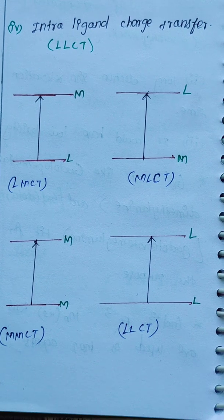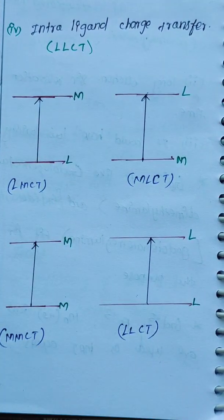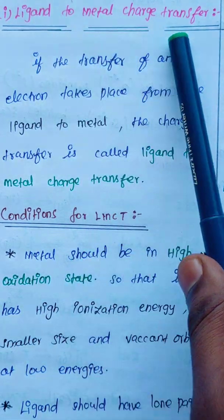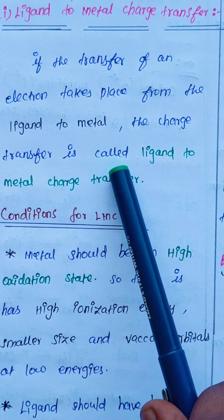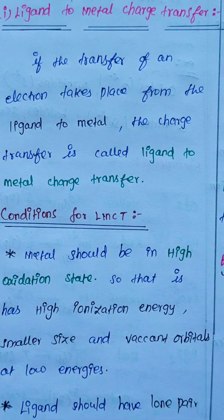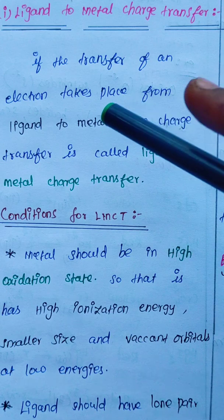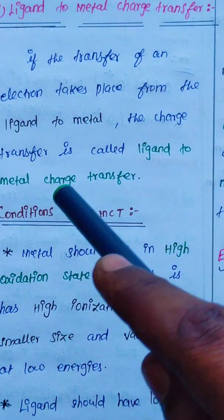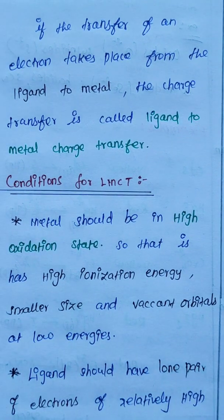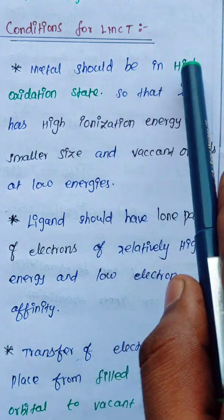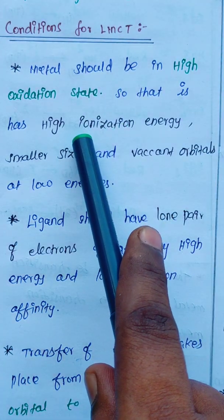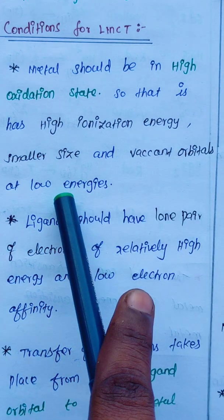For ligand to metal charge transfer: if the transfer of an electron takes place from the ligand to the metal, the process is called ligand to metal charge transfer. The first condition is that the metal should be in a high oxidation state, so that it has a high ionization energy, smaller size, and vacant orbitals at low energy.